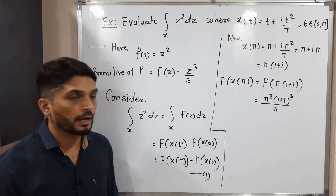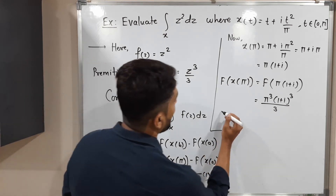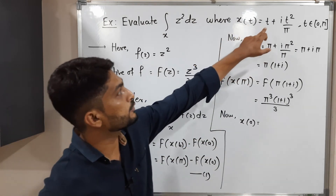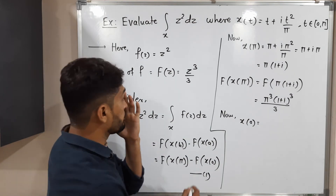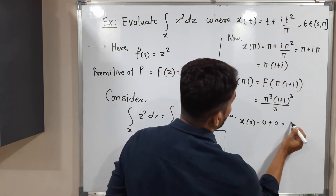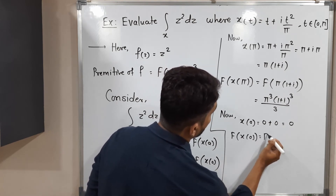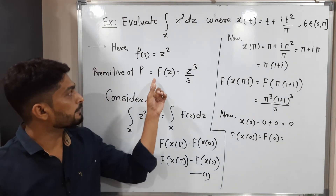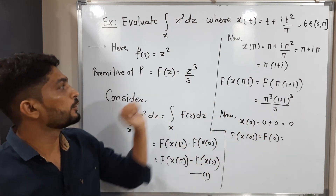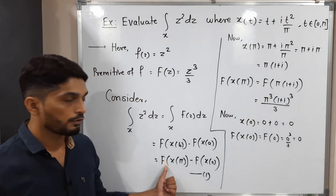Now let us work on F of X of zero. First, X of zero: substituting t equals zero in the definition of X, we get zero plus i times zero squared over zero, which gives zero. So X of zero equals zero. Now F of X of zero means capital F evaluated at zero: zero cubed divided by 3, which equals zero.